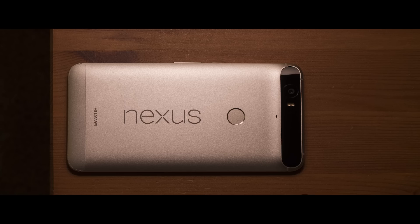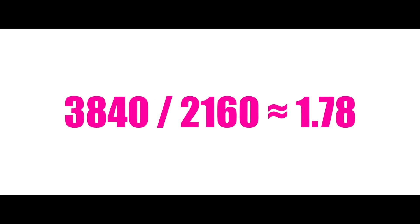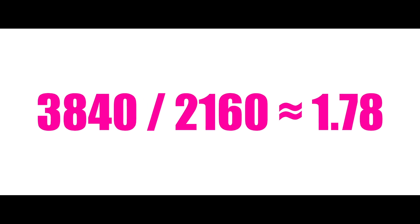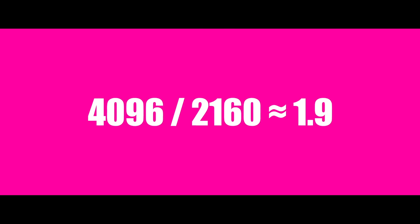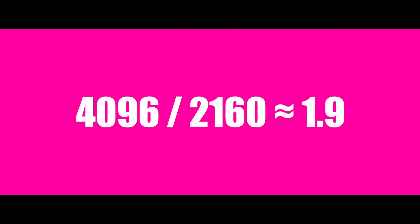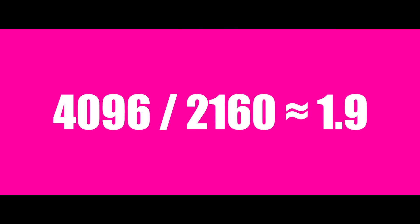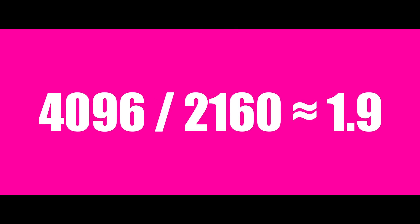Just like all your monitors and your phones, ultra-high definition is 16x9, or a 1.78 aspect ratio. On the other hand, we have 4K, which equates to an approximate 1.9 aspect ratio.